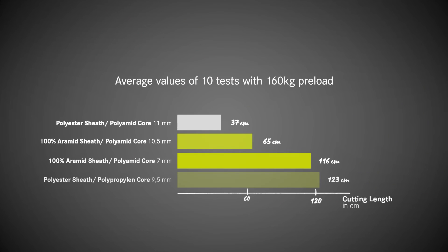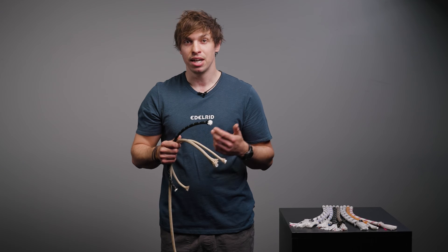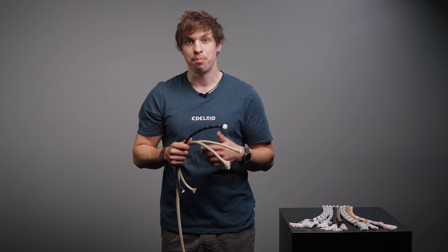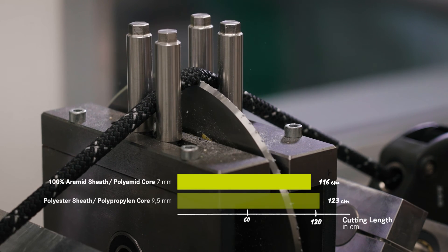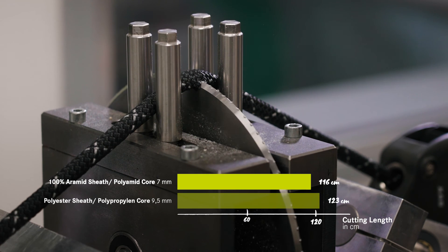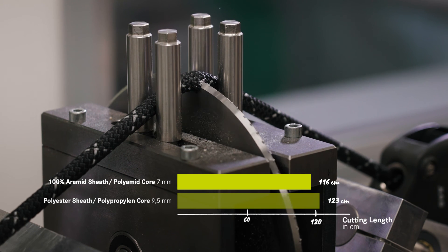What we can see is that the 10.5mm static rope with a 100% Aramid sheath is clearly better than the best rope we had at 160kg. But what is interesting is that the cut value of the 7mm accessory cord — 3.5mm thinner than the static ropes — is even better than the 10.5mm static rope. So this shows that Aramid could be a positive influence on cut value, but the construction and all its parameters are what really count. And to underline this even more: the polypropylene and polyester rope with no Aramid whatsoever has an even higher cut value than the 7mm accessory cord with a 100% Aramid sheath.